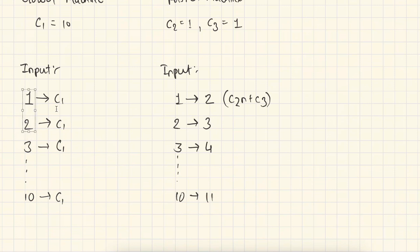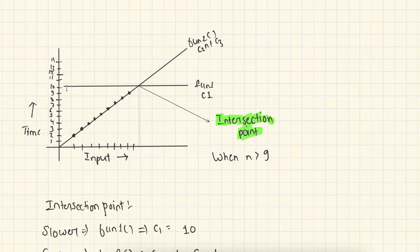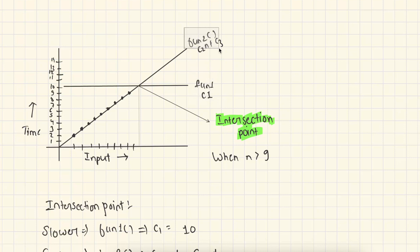Now let's take all the inputs and running times and plot a graph. When we plot the graph, we can see that for all inputs, function one takes a constant amount of time. But for function two, it takes a linear amount of time — for input size 1 it takes 2 units, for input size 2 it takes 3 units, for input size 3 it takes 4 units. So by looking at this graph, function two is growing linearly and function one is growing constantly. The order of growth of function one is constant and the order of growth of function two is linear.